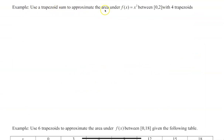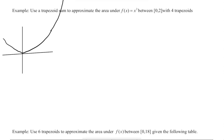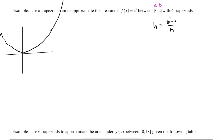Example 2: Use a trapezoidal sum to approximate the area under f(x) = x² between 0 and 2 with 4 trapezoids. They may give you a graph — you don't need it, but it helps to picture it. Drawing x² roughly. Now let's find the height of each trapezoid: h = (b − a)/n = (2 − 0)/4 = 1/2.